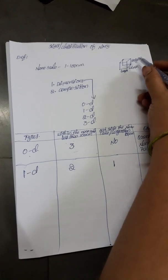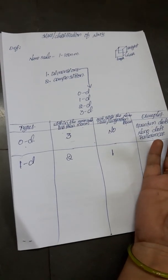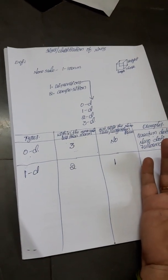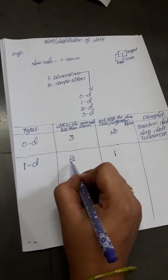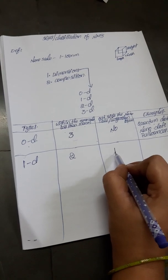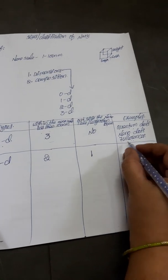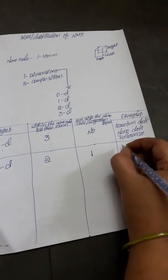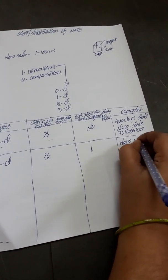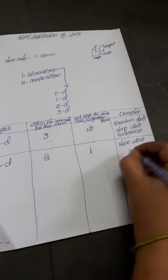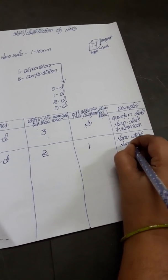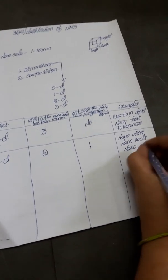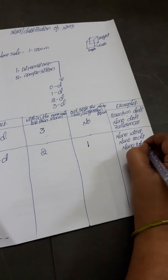Any one dimension — either height, width, or length — will be outside of the nanoscale, while two dimensions are within the nanoscale. Examples of one dimensional nanomaterials are nanowires, nanorods, and nanotubes.